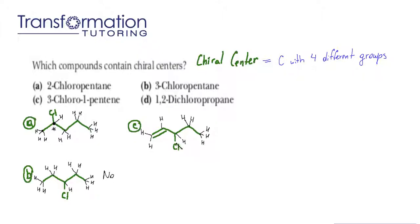We have chlorine and we also have hydrogen. Now we can see that even though the left and the right side each contain two carbons, the left side is different from the right side because on the left we have a double bond, and on the right we do not. Therefore, this carbon indeed does have four different groups: a chlorine, a hydrogen, two carbons with the double bond on the left, and two carbons without the double bond on the right. It is a chiral center, and we will go ahead and put an asterisk next to it.